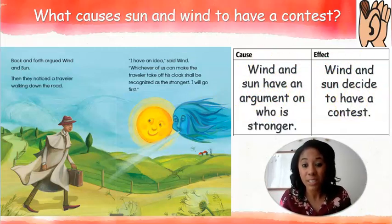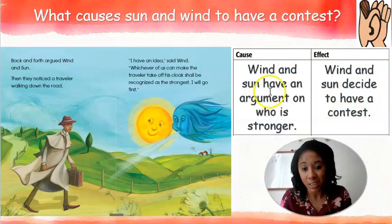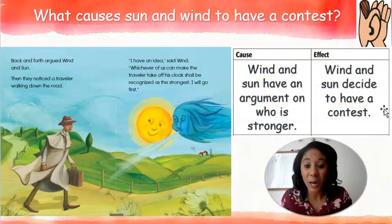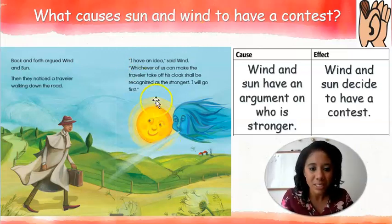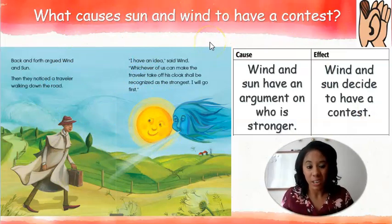This is how Ms. Finney figured out the cause and effect in the story. My cause was that wind and sun were having an argument about who was stronger. My effect was that wind and sun decided to have a contest to figure out who was stronger. I used my text and the question at the top to help me understand what the cause was and what the effect was.